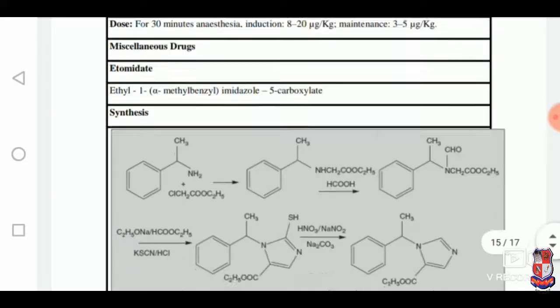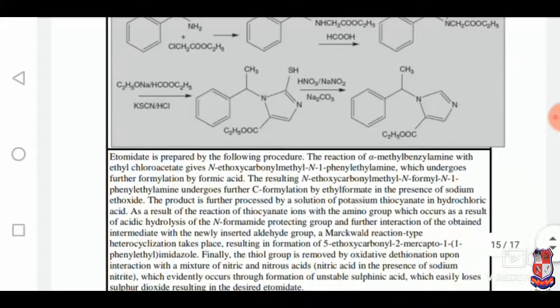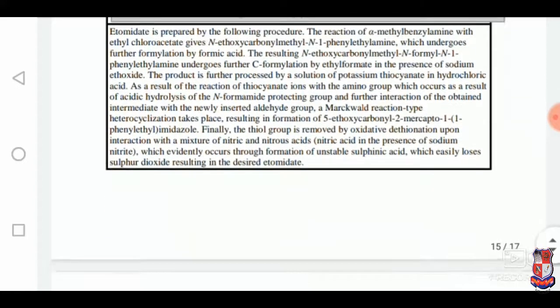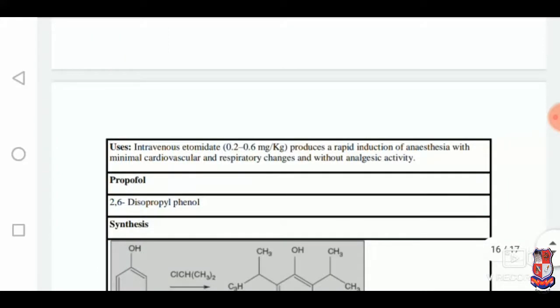Miscellaneous drugs: etomidate is synthesized from alpha-methyl-ethylbenzylamine with ethyl chloroacetate. It is used as intravenous etomidate, which produces rapid induction of anaesthesia with minimum cardiovascular and respiratory changes and without analgesic activity.